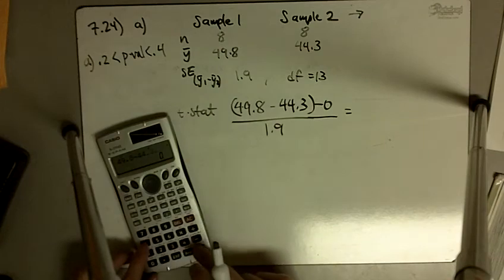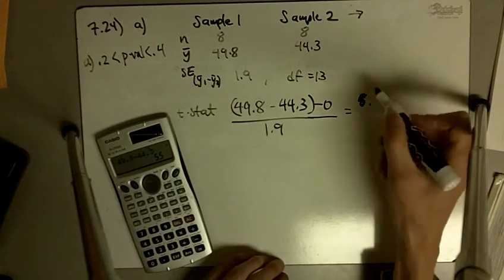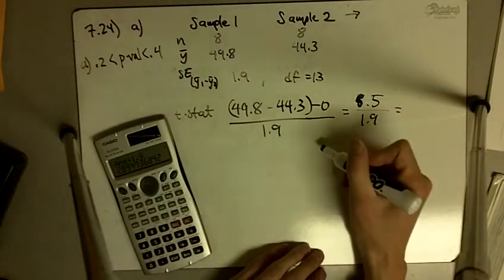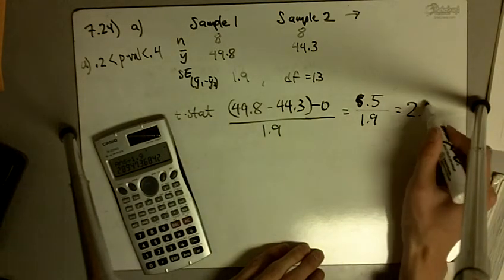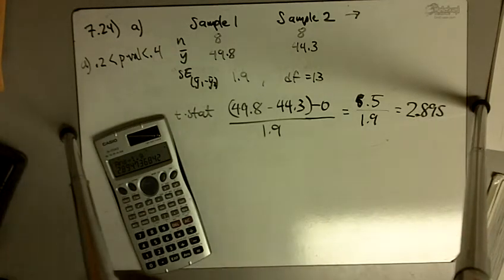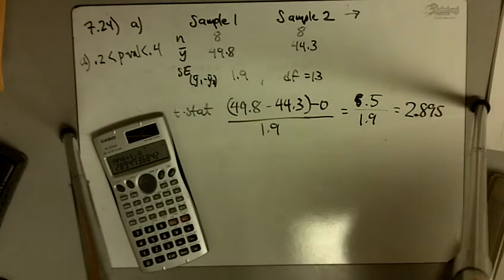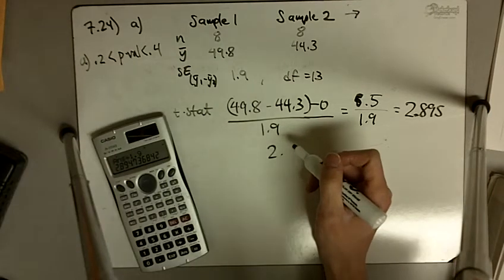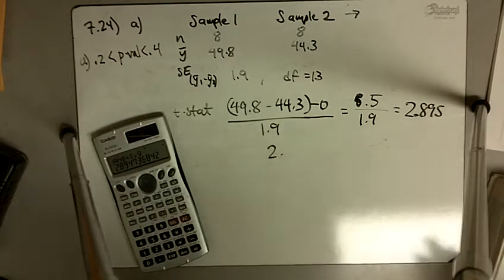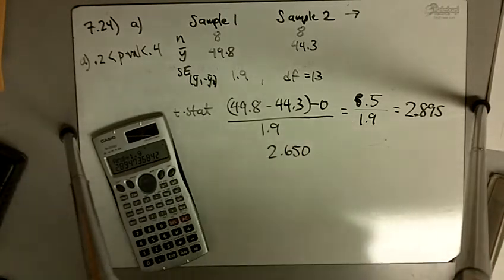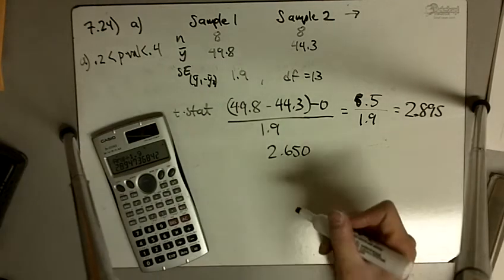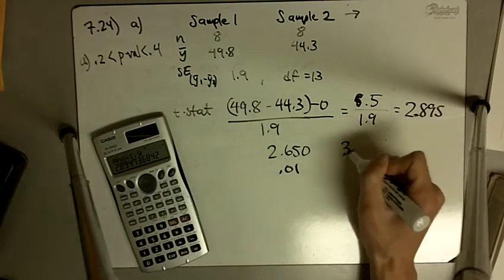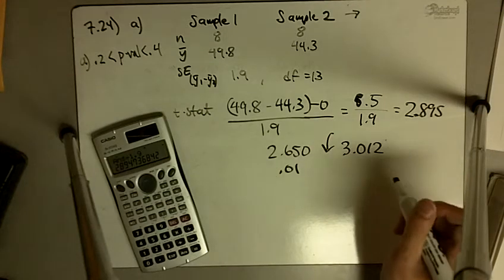We have 2.895. We go to 13 degrees of freedom. The closest numbers I can find for 2.895: we have 2.650, and the corresponding p-value is 0.01. Then next up is 3.012. So 2.895 falls in between there, and this is 0.005.